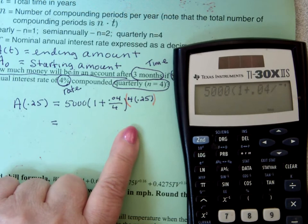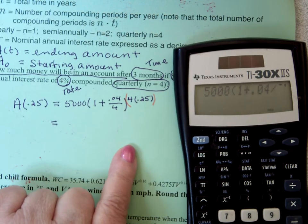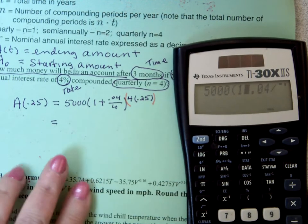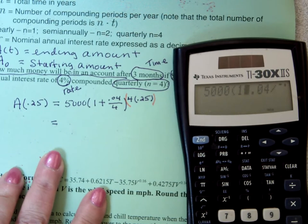And let me check that out, make sure I've got it typed in correctly. Now, I should have more than $5,000 in three months. Probably not much more than $5,000, when you come right down to it. Because it's only three months. 5,050 bucks.